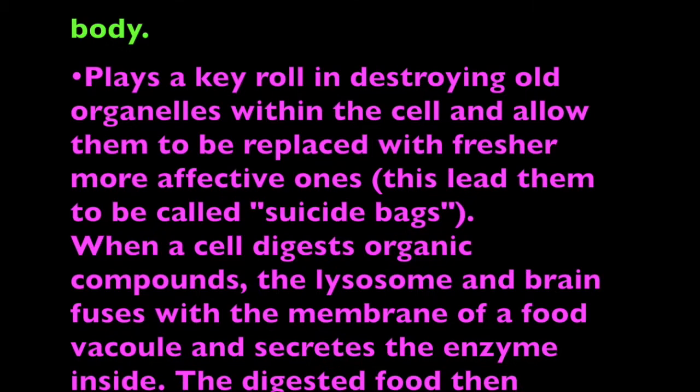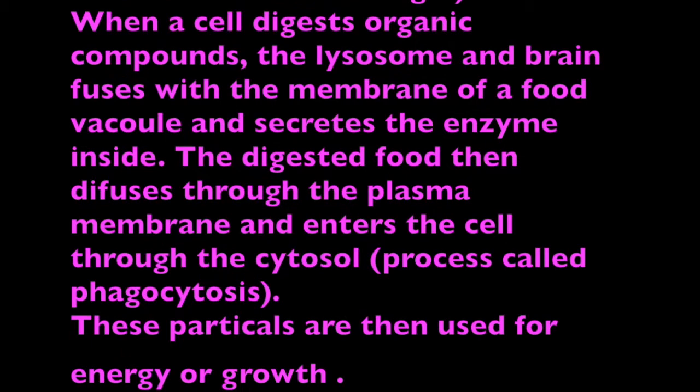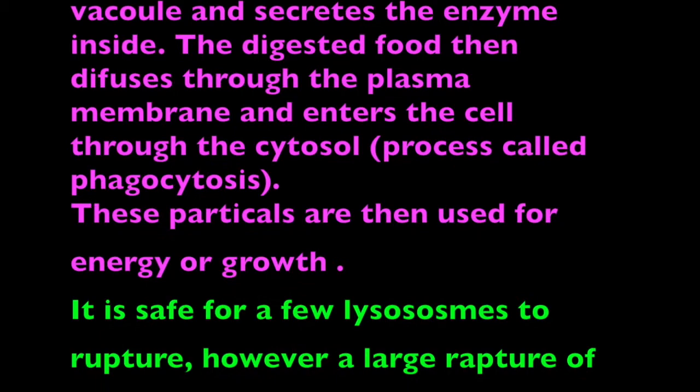When a cell digests organic compounds, the lysosome fuses with the membrane of a food vacuole and secretes the enzyme inside. The digested material then diffuses to the plasma membrane and enters the cell into the cytosol, a process called phagocytosis. These particles are then used for energy or growth.